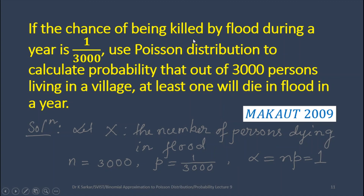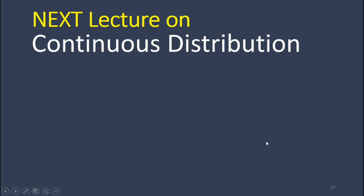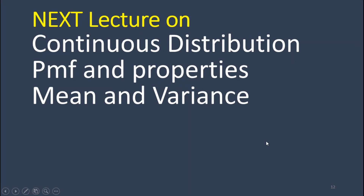Next question: if the chance of being killed by flood during a year is 1/3000, use Poisson Distribution to calculate the probability that out of 3000 persons living in a village, at least one will die in a flood in a year. This question appeared in the semester exam of 2009. Here n = 3000 and p = 1/3000, so p is very small compared to n, and alpha = np = 1. Apply the Poisson Distribution PMF to get the result — do it yourself. The next lecture will cover Continuous Distribution — PMF and Properties, Mean and Variance.